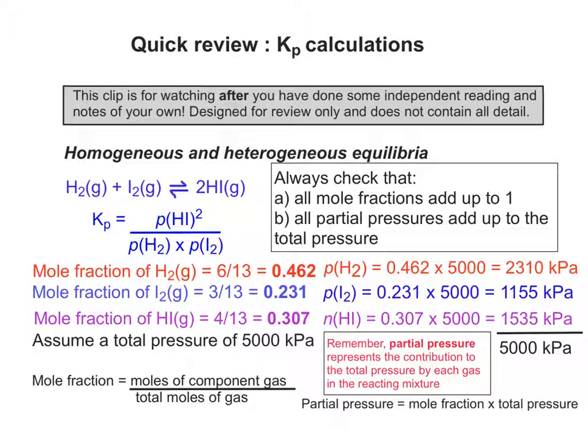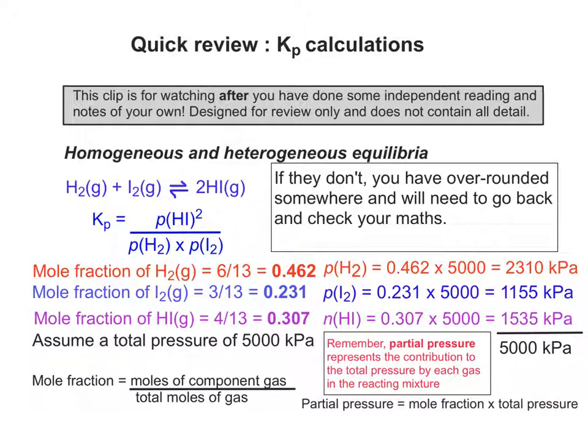So it's always a good idea to check that all the mole fractions add up to one, all the partial pressures add up to the total pressure. And if they don't, it means you've over-rounded somewhere, and you'll need to go back and check your maths and adjust until they do.